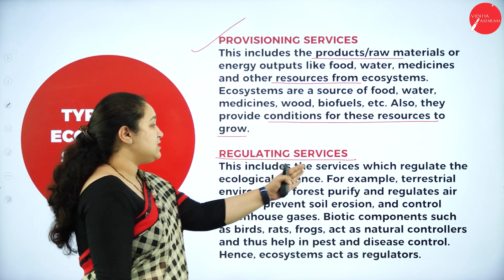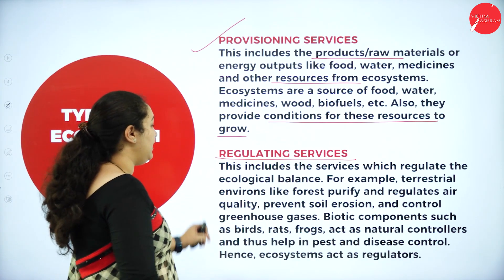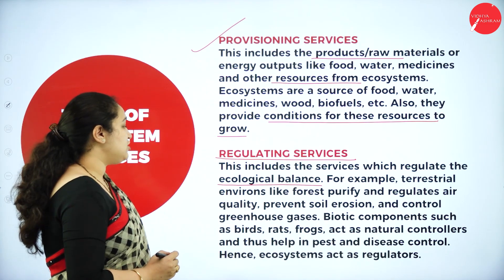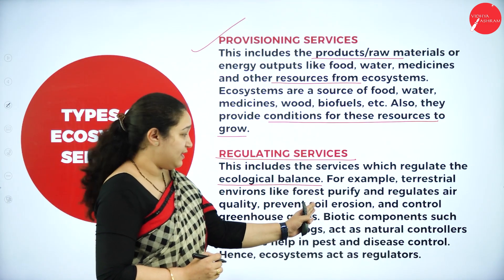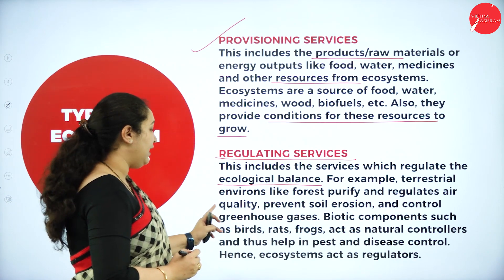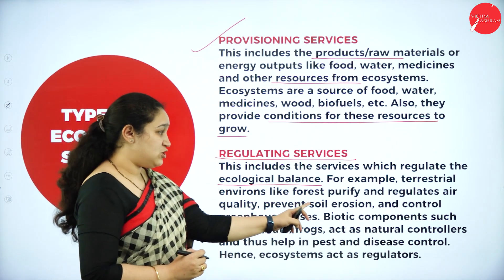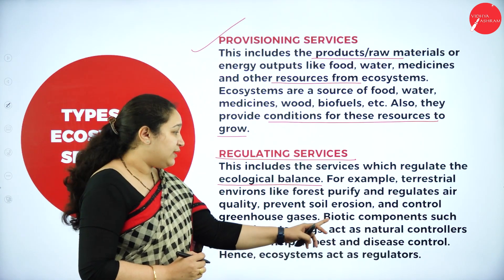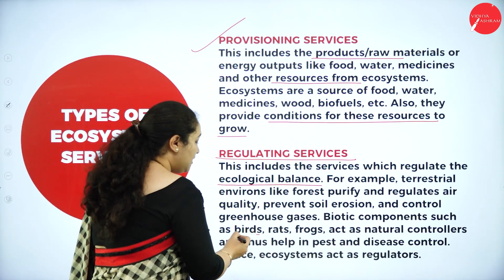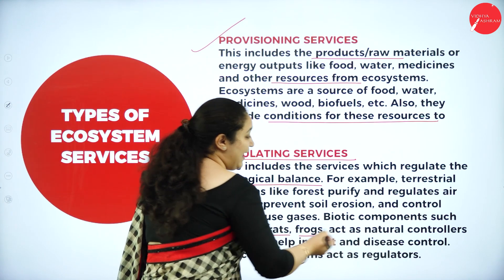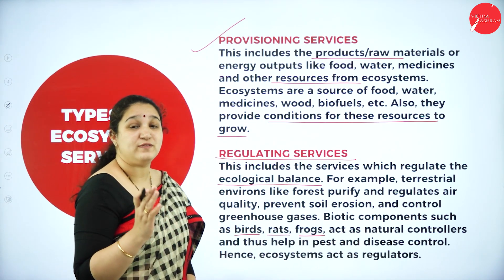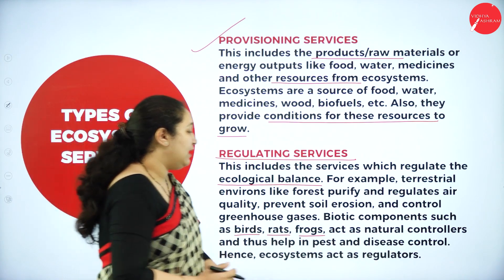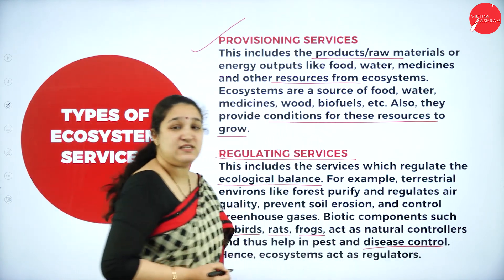Regulating services include services which regulate the ecological balance. For example, terrestrial environments like forests purify and regulate air quality, prevent soil erosion, and control greenhouse gases. Biotic components such as birds, rats, and frogs act as natural controllers of pests, and they can also control diseases.